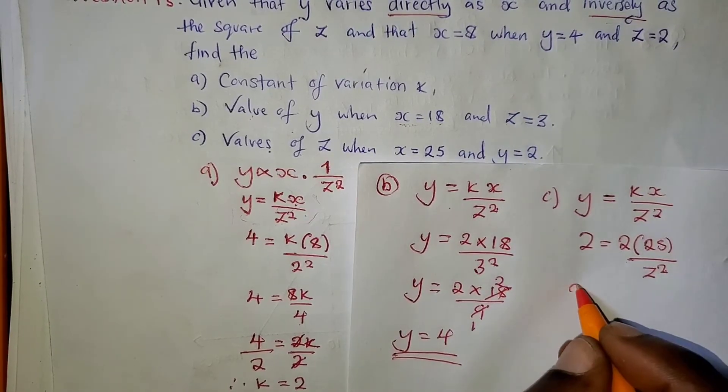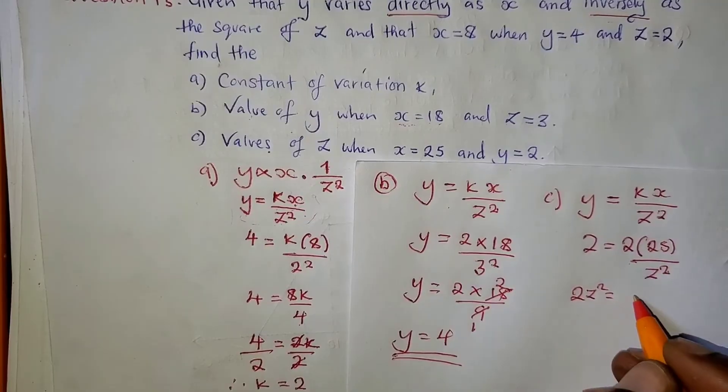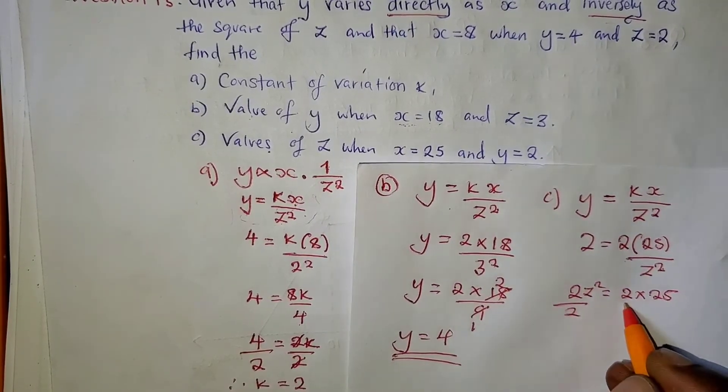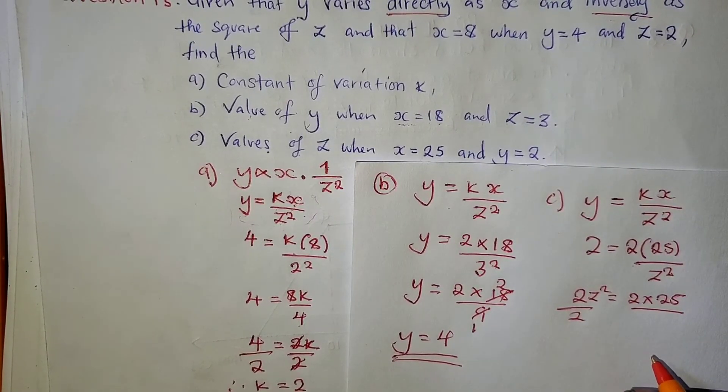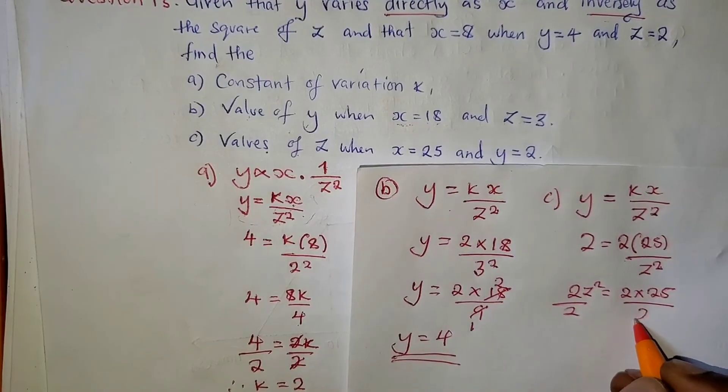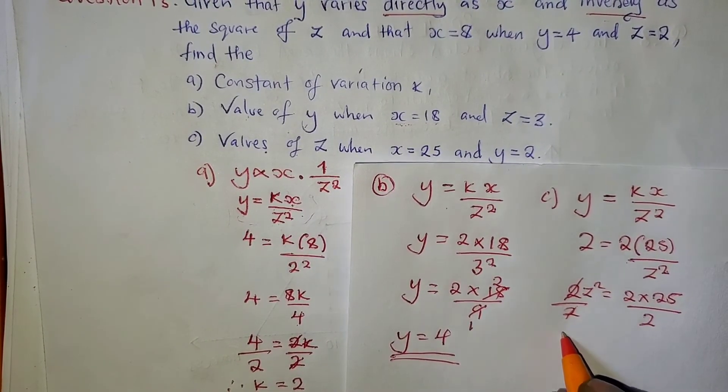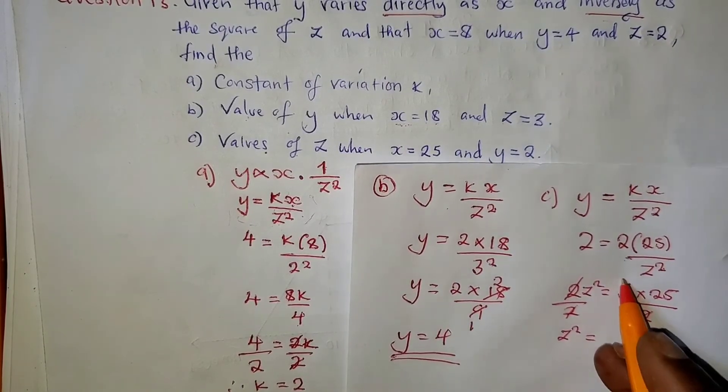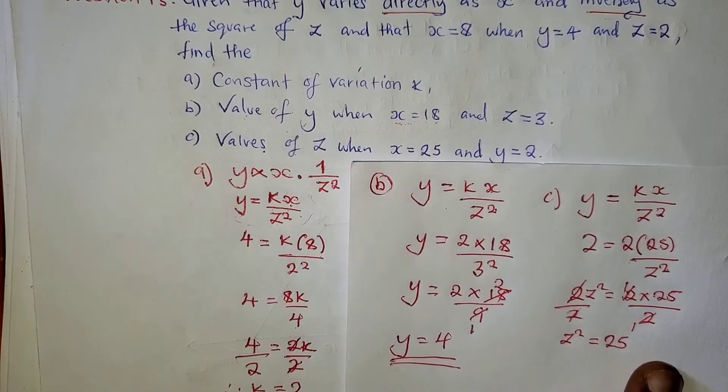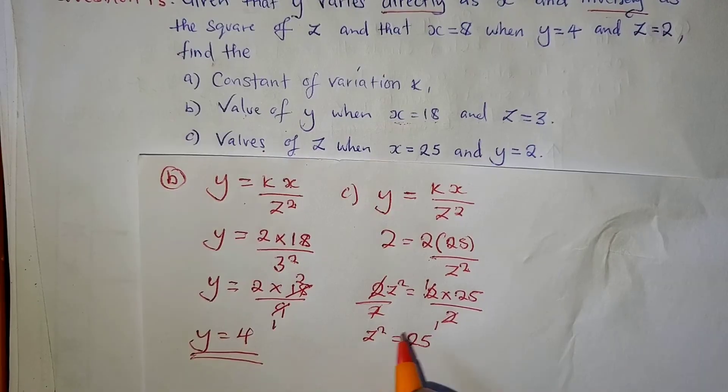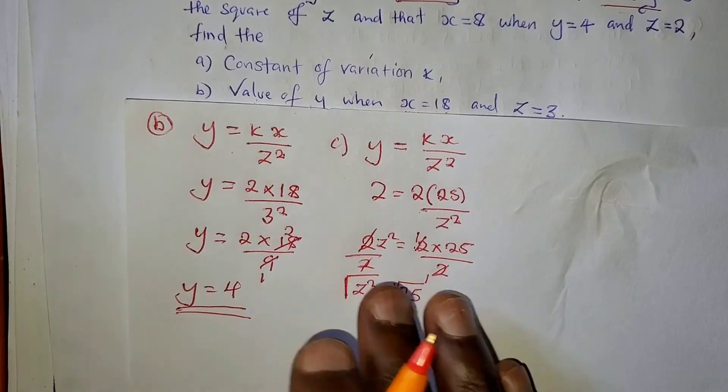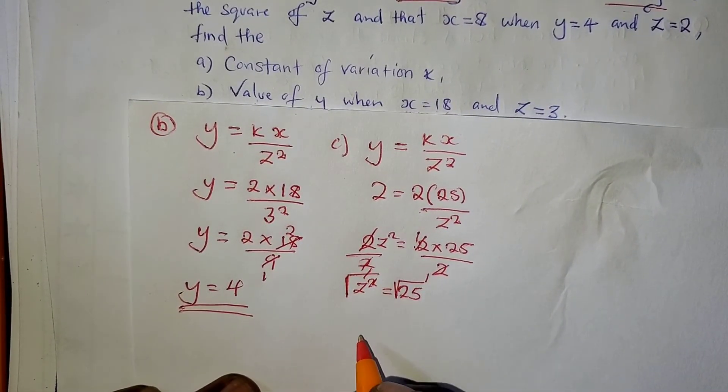We cross multiply. We're going to have 2Z squared equals 2 times 25. There's a reason why I've done this over 2. We want to simplify. This is paper 1, you're not supposed to use a calculator, so make every calculation simple. So over 2 in this side, Z squared equals 2 into 2 is 1, so remain with 25. When you reach this stage, you square root both sides. This power and this, it's very simple, cancel.